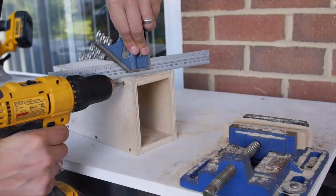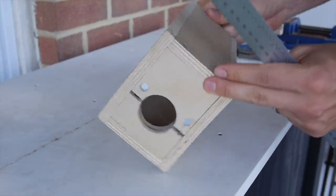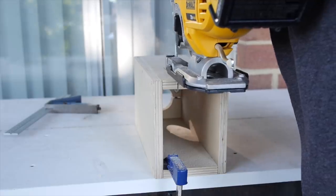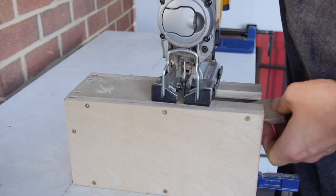You may have noticed with this design that the drill is inside of the sliding mechanism, which means we need to cut a piece out of the box to allow the handle of the drill to pass through.